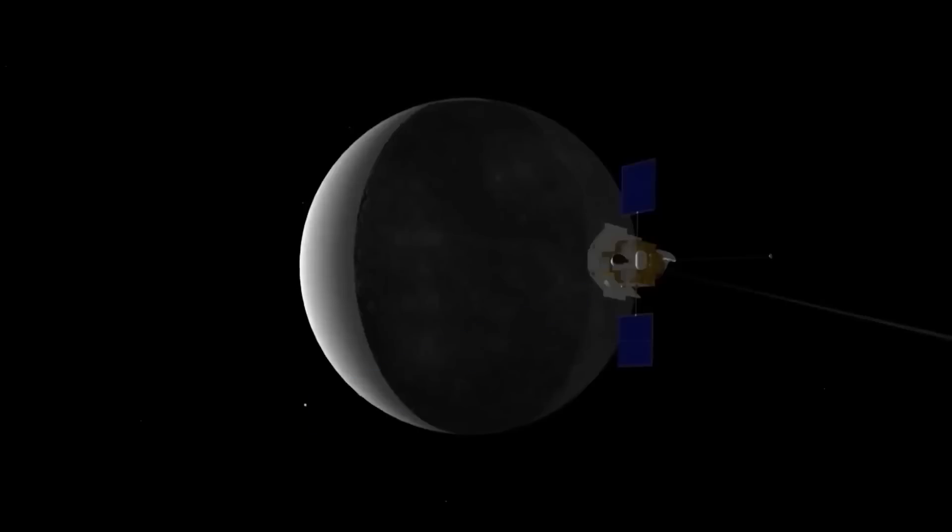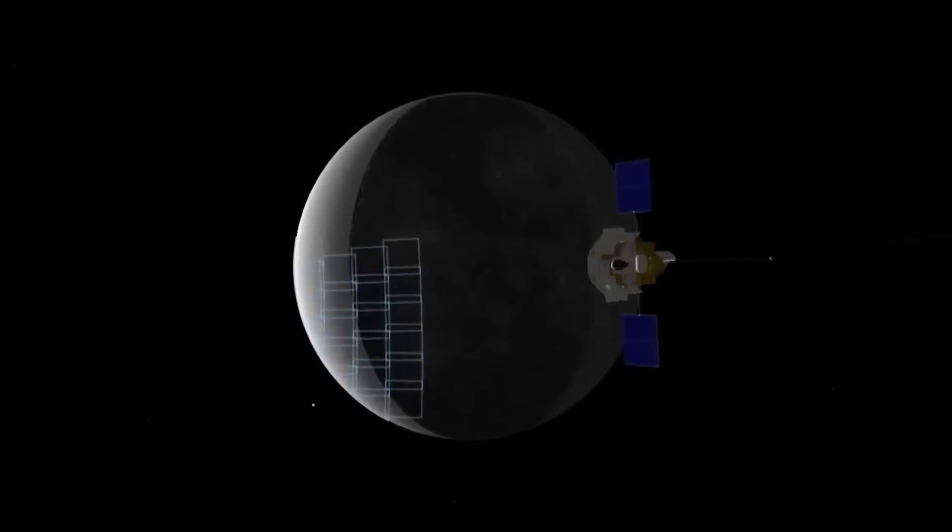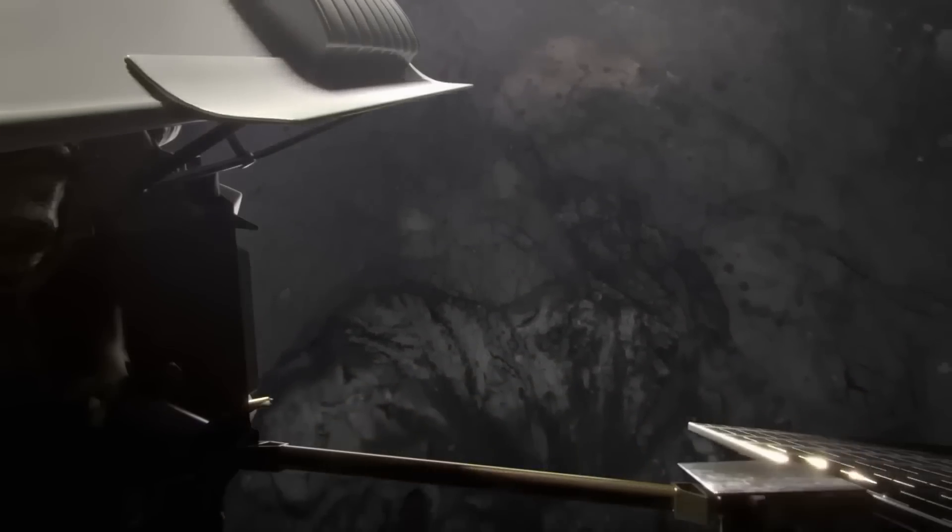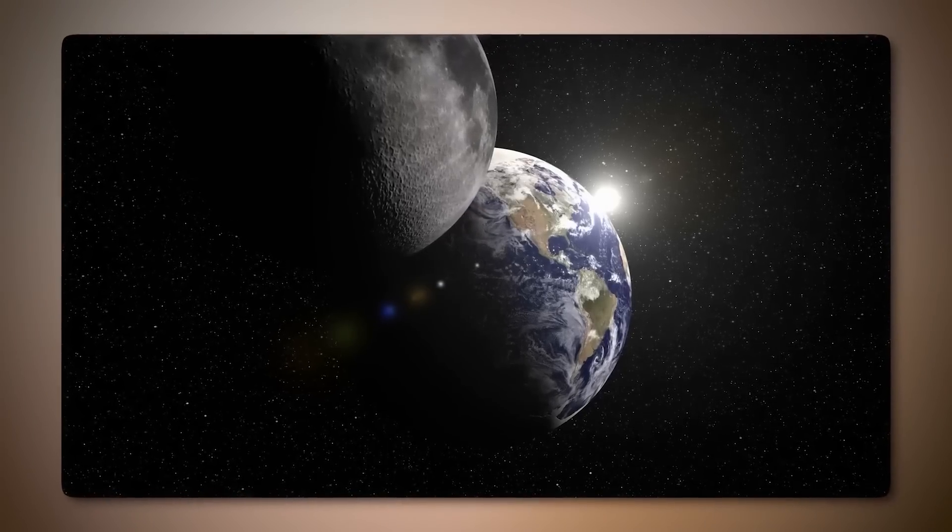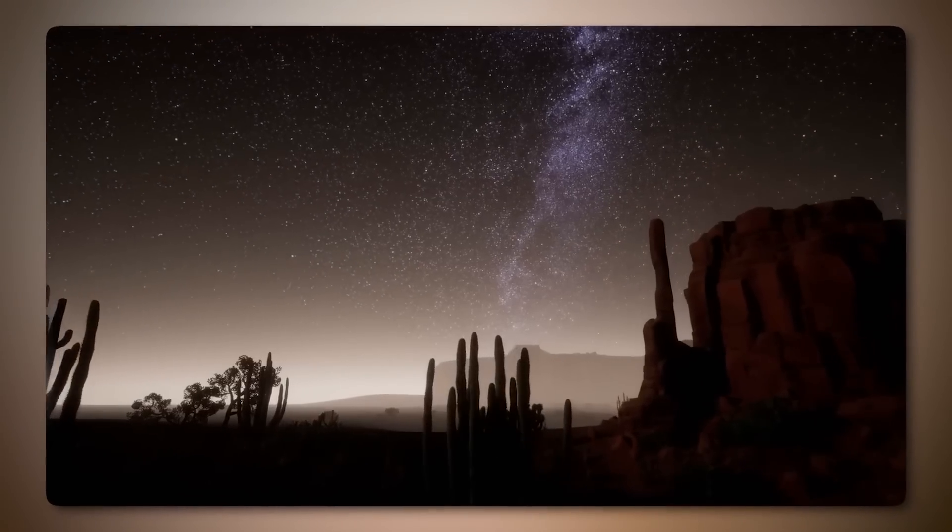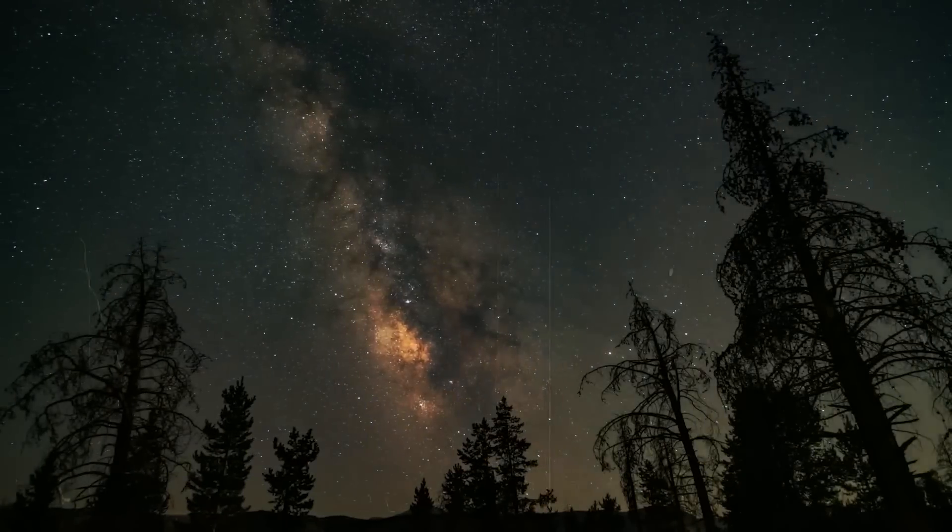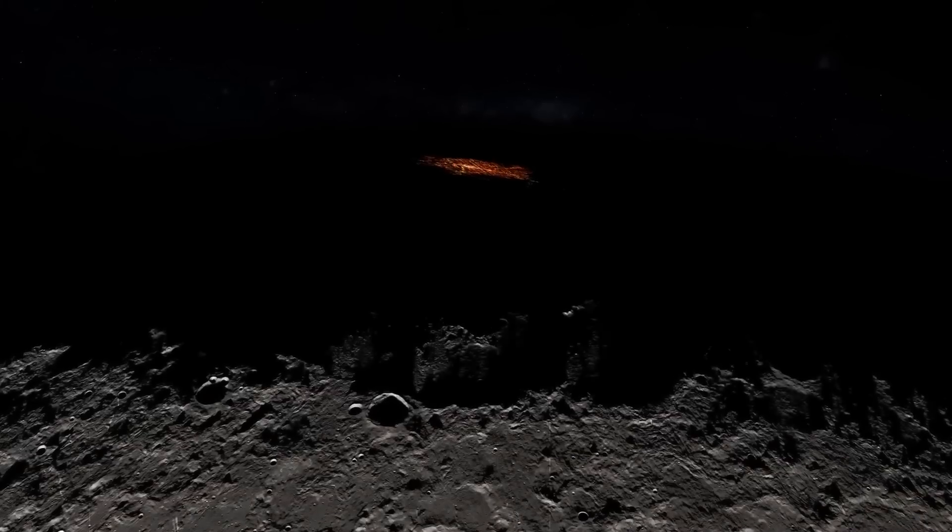But here's the twist. JWST didn't find just one pair. It found 40 Jumbos, making up nearly 10% of all the free-floating planets detected in the nebula. This isn't just unlikely.